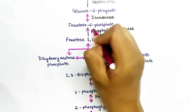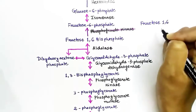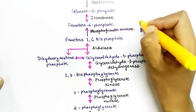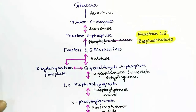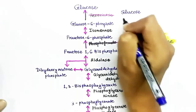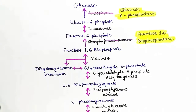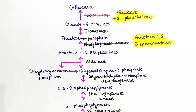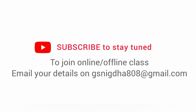For all reversible reactions, the same enzymes as in glycolysis are used. The first enzyme change occurs at fructose-1,6-bisphosphate to fructose-6-phosphate conversion, where fructose-1,6-bisphosphatase is used in gluconeogenesis. The second enzyme change is at glucose-6-phosphate to glucose, where glucose-6-phosphatase replaces hexokinase. In total, there are only four different enzymes from glycolysis used to convert pyruvate to glucose in gluconeogenesis.